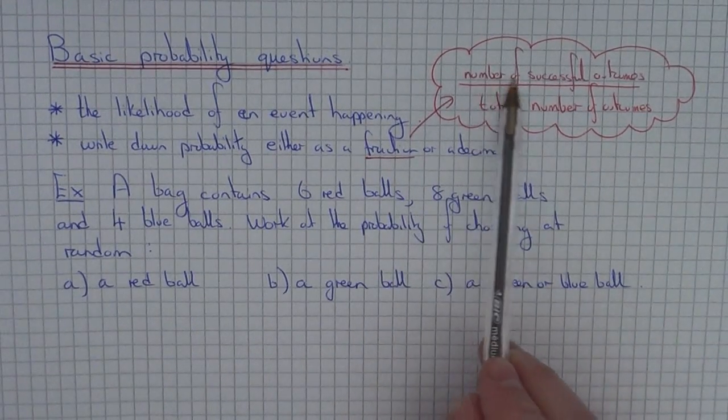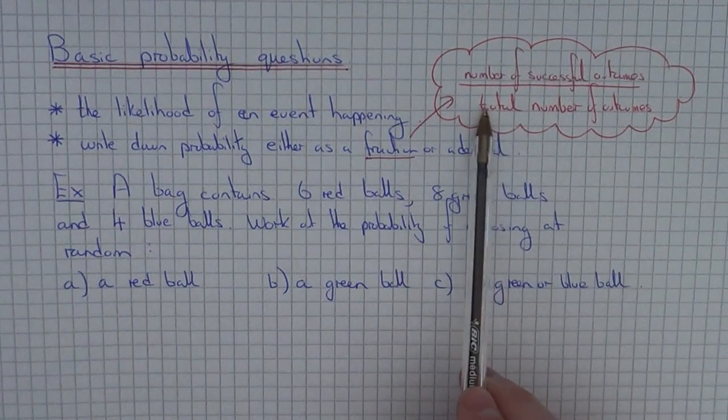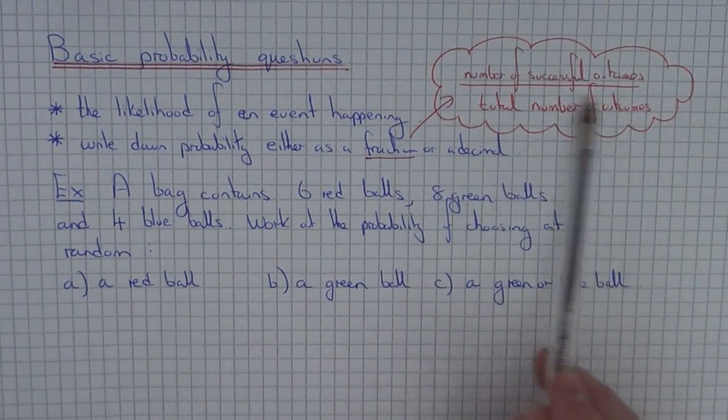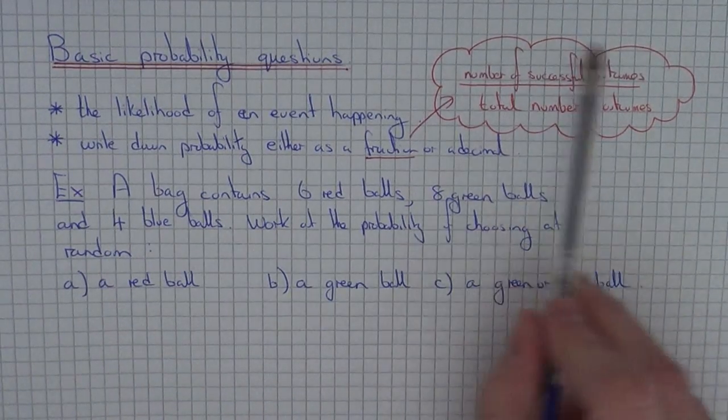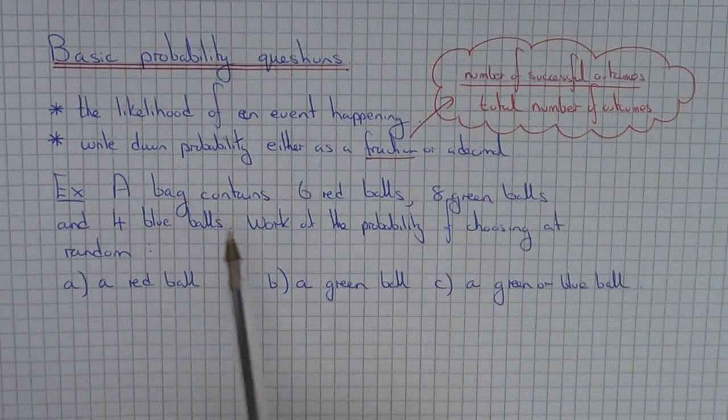You can put the number of successful outcomes on the numerator out of the total number of outcomes on the denominator. So let's apply this formula here to this example.